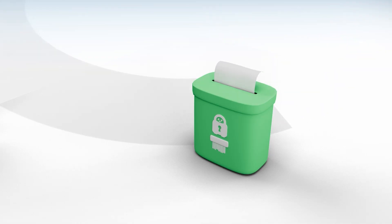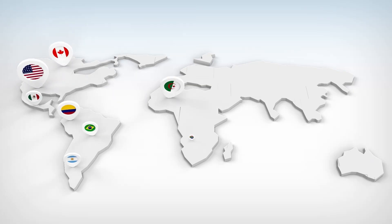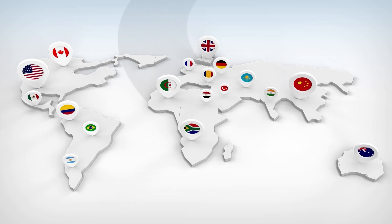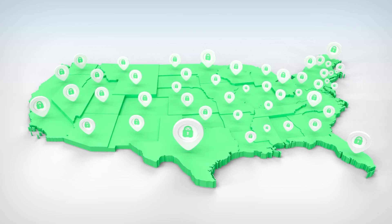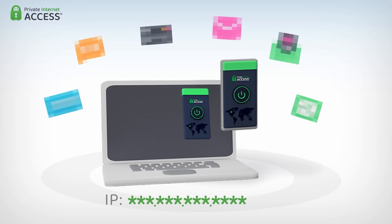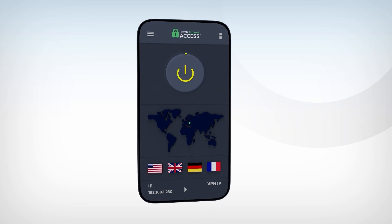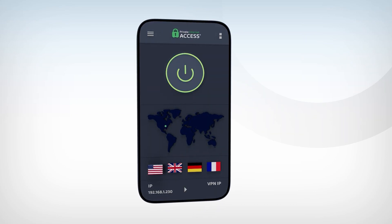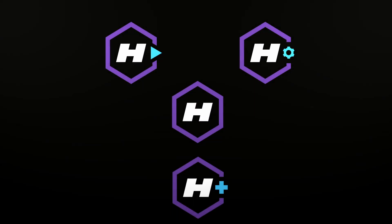PIA has a no-log policy so all of your data activity is seen by you and you alone. PIA allows you to change your IP address to one of over 80 countries as well as all 50 US states. This comes in clutch for gamers looking to connect to multiplayer servers in different regions. Sign up via the link in the description to get 83% off and four extra months for free — this deal comes out to about two dollars a month. Thank you to Private Internet Access for sponsoring this video. Let's get into it.